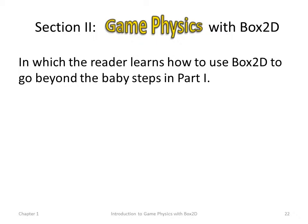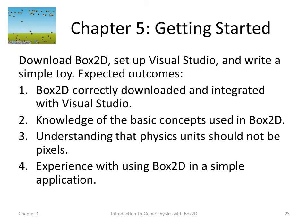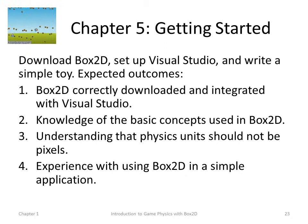Once we've ploughed through that, section two — game physics with Box2D — in which I expect you to learn how to use Box2D to go beyond what were essentially baby steps in Part 1. Chapter 5, Getting Started with Box2D, shows you how to download Box2D, set up Visual Studio, and write a simple toy. Expected outcomes: Box2D correctly downloaded, integrated with Visual Studio, and ready to rock and roll. I'll also show you the basic concepts and terminology of Box2D, and an important concept: physics units should not be pixels. Physics units should be a floating point value, and I'll show you why.